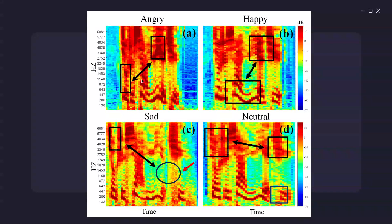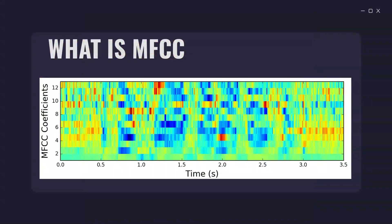Because Mel spectrogram is just an image — a visual representation — how do we use it in a machine learning model? That is what we are going to learn today. MFCC is a feature extracted from the Mel spectrogram. These features, called Mel Frequency Cepstral Coefficients, provide a way to represent the Mel spectrogram as a 2D matrix — a mathematical format that we can use in machine learning modeling.